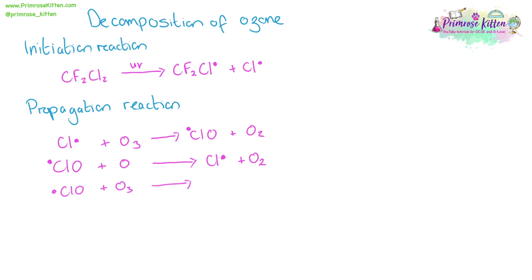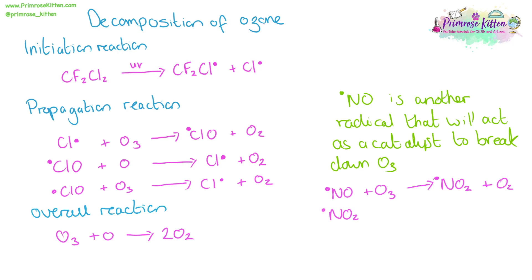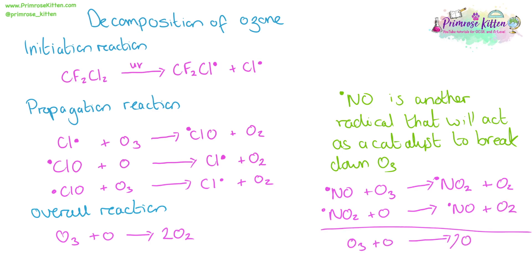The chlorine oxide radical can also react with ozone itself to give the chlorine radical and O2. The overall effect of this reaction is to take ozone, O3, react it with an oxygen atom to give two O2 molecules. NO is another radical that can catalyse the breakdown of ozone in a very similar set of reactions to chlorofluorocarbons, giving the same overall reaction of ozone being turned into oxygen gas.